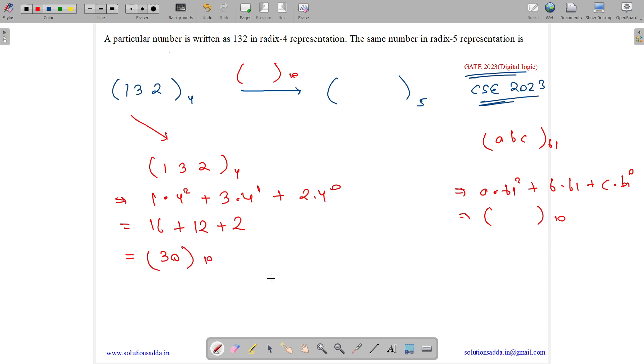For converting any number from base-10 to any other base, we divide that number with that base. So 5 goes into 30, remainder is 0. 5 goes into 6, quotient is 1, remainder is 1, and we have 1 over here.